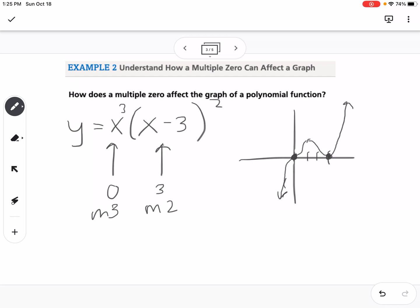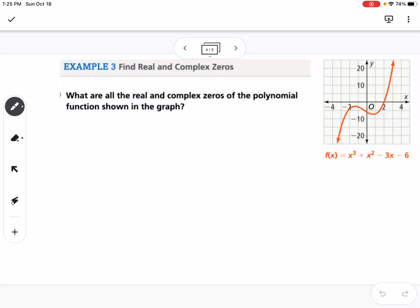So again, multiplicity is when you have multiple zeros that are the same.